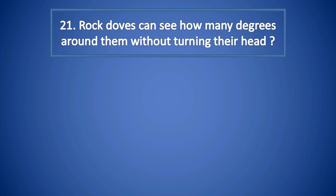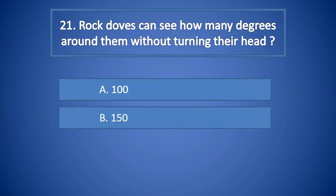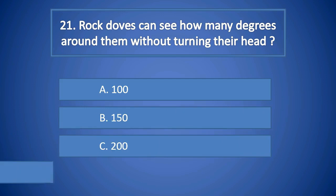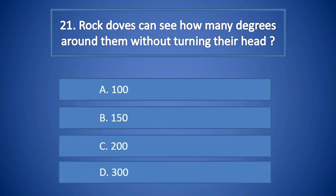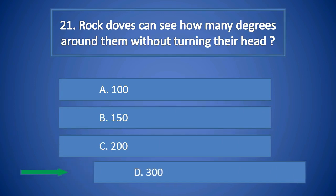Question Number 21: A Rock Dove can see how many degrees around them without turning their head? A. 100, B. 150, C. 200, D. 300. Right answer is D. 300.